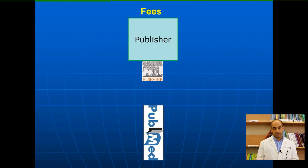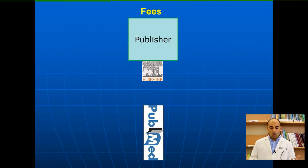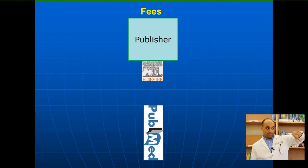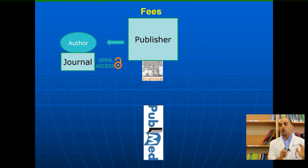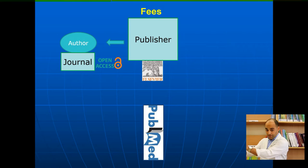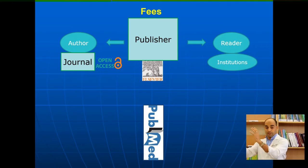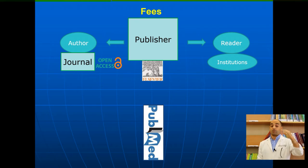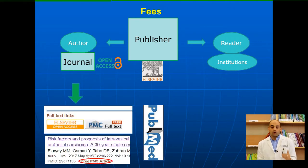On PubMed you will see some articles with free full text and others without. This depends on publication fees. The publisher charges fees that can be taken from either the producer — the author or journal — or the consumer, which is the reader, institution, or university. If fees are taken from the author or journal, the article will be free access, which we call open access.